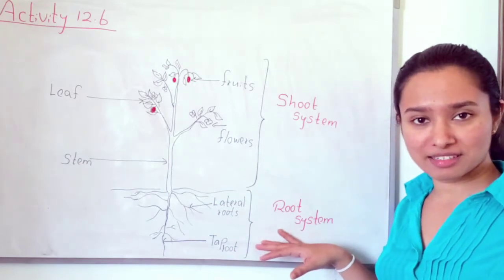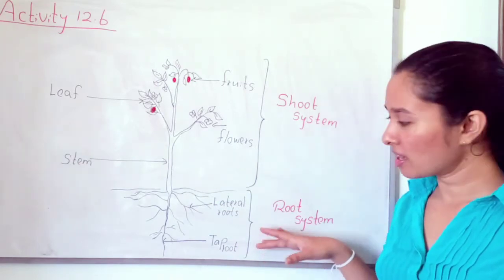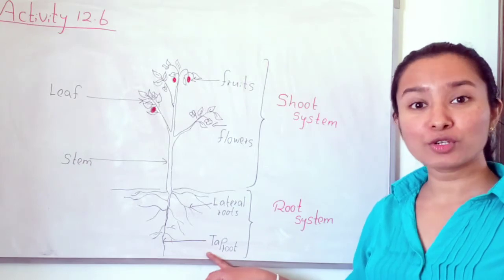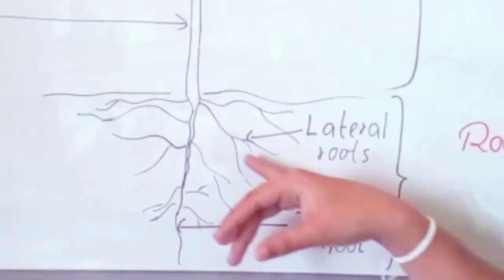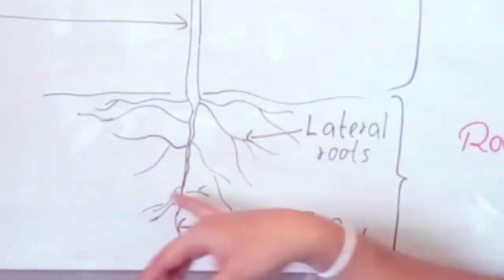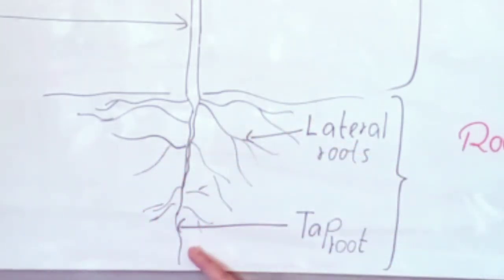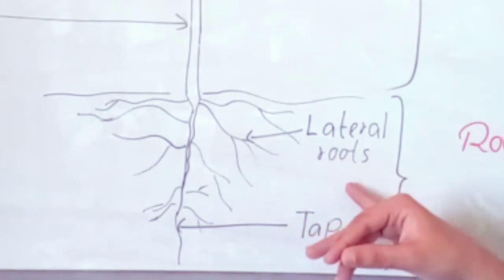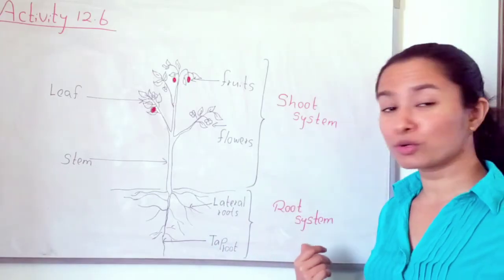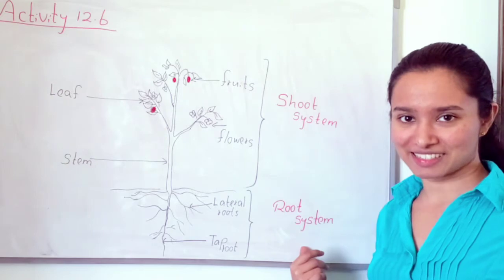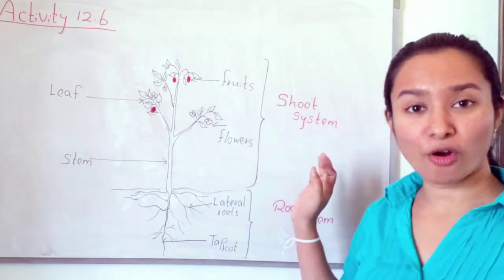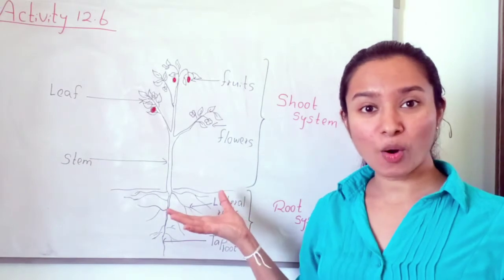Looking at the root system, we can see two organs: lateral roots and taproot. Taproot and lateral roots are the organs of the root system. Now you know the systems of the plant and what are the organs.